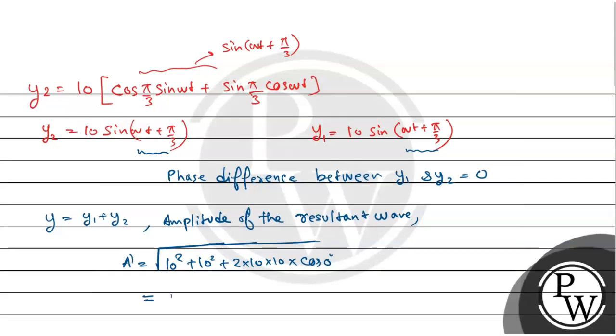This equals 10 plus 10 that equals 20. The resultant wave amplitude will be 20 centimeter.